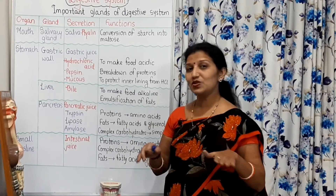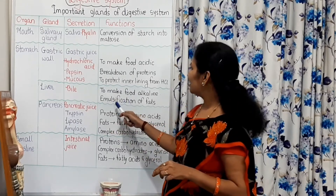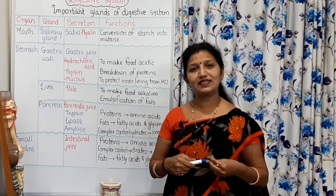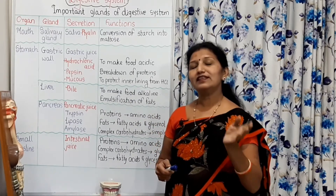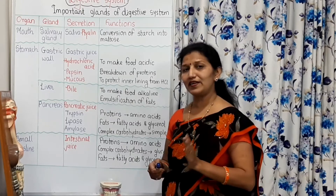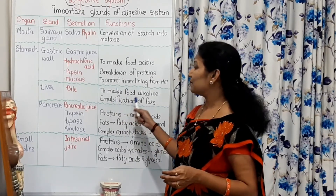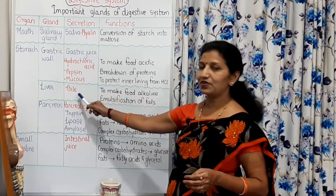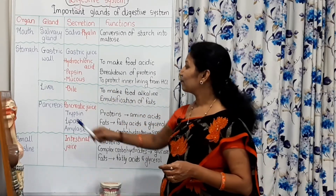The food is neutralized by bile. Then, emulsification of fats — the larger fat molecules are converted into smaller fat molecules, and that is called emulsification of fats, by the action of bile juice.